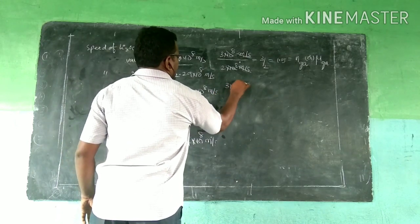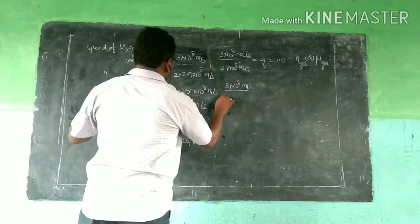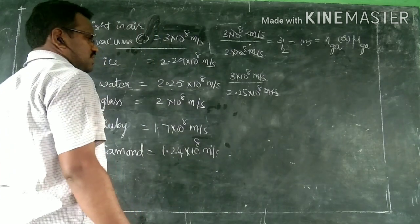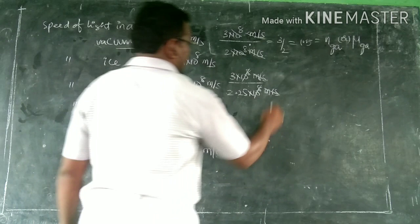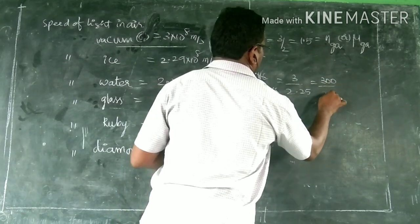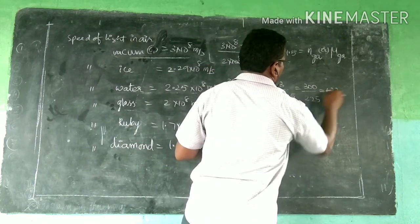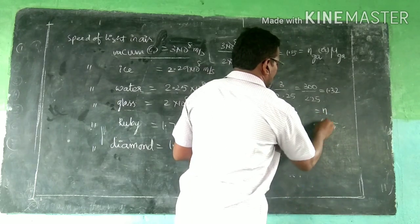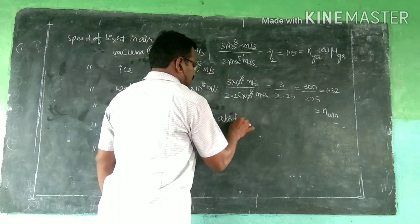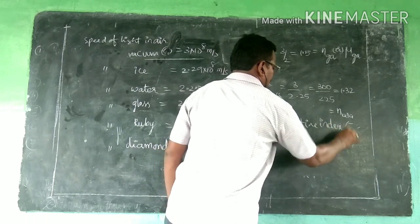One more example: comparing 3×10⁸ m/s (air) with 2.25×10⁸ m/s (water), by cancelling units and powers of 10 we get 3/2.25, which equals 300/225. Multiplying appropriately, we get approximately 1.33. This is nothing but the absolute refractive index of water with respect to air.